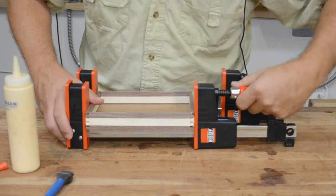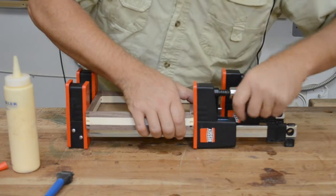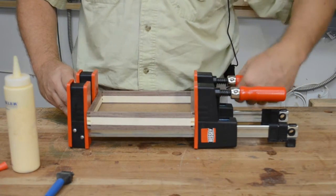If your projects tend to run small, you will want all the capabilities of Bessey's Revo parallel bar clamps, but in a smaller size. These projects call for the Revo Junior.